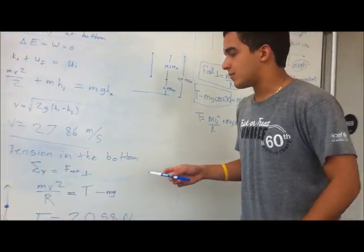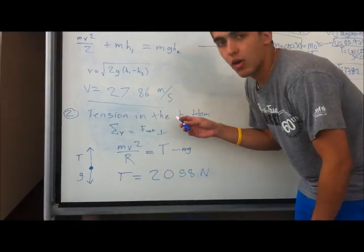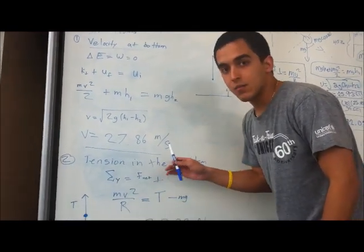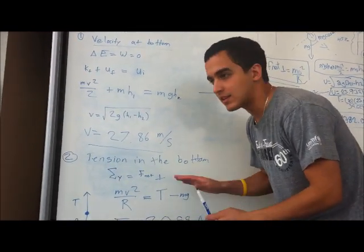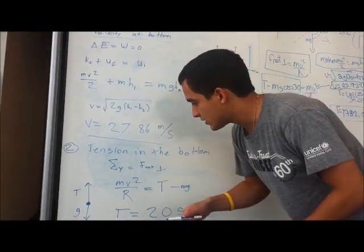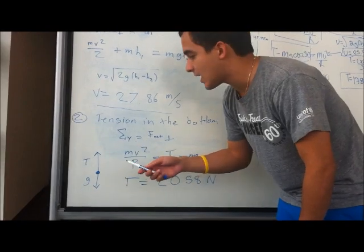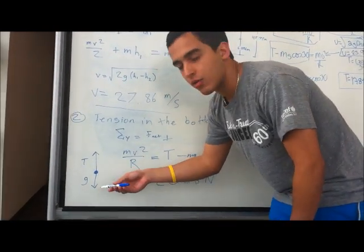Now the tension at the bottom of the pendulum. We are only interested in the sum of forces in Y, because at the bottom of the pendulum, that's the relevant direction. In our free body diagram, we notice that there are only two forces acting: tension and gravity.